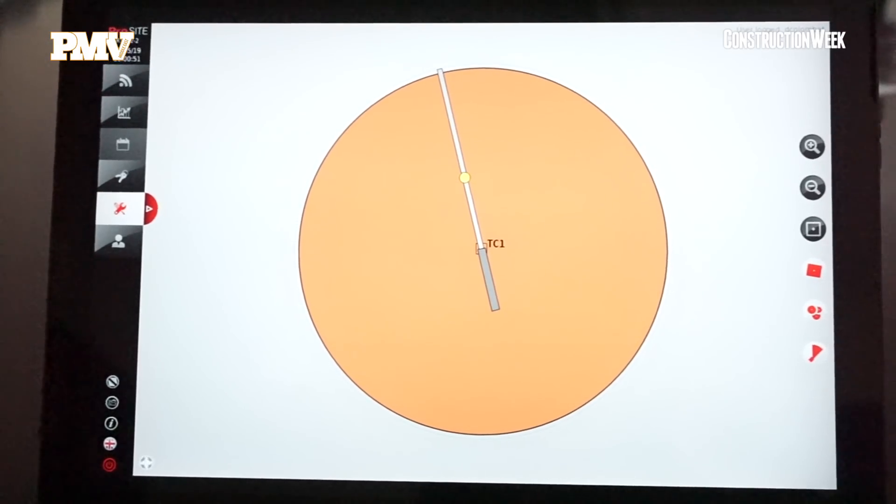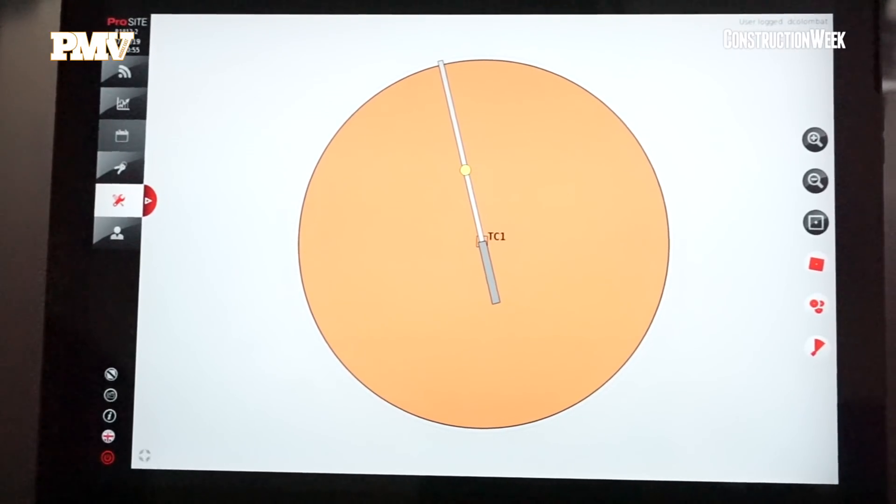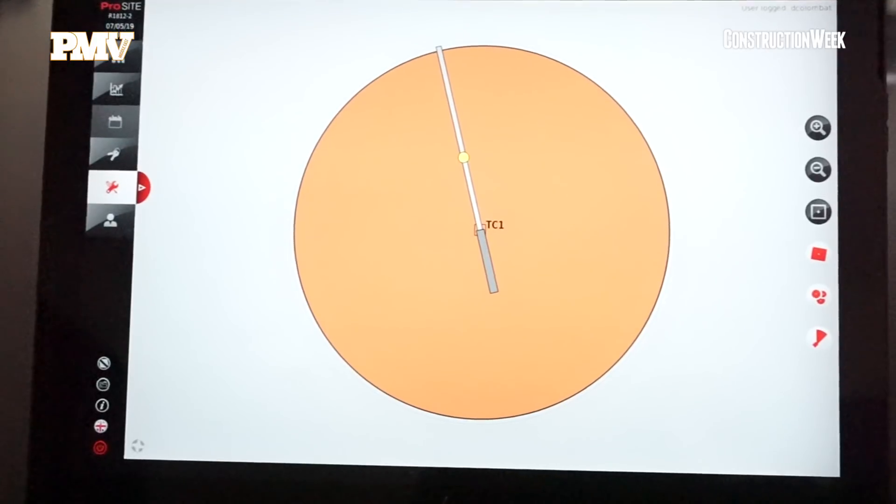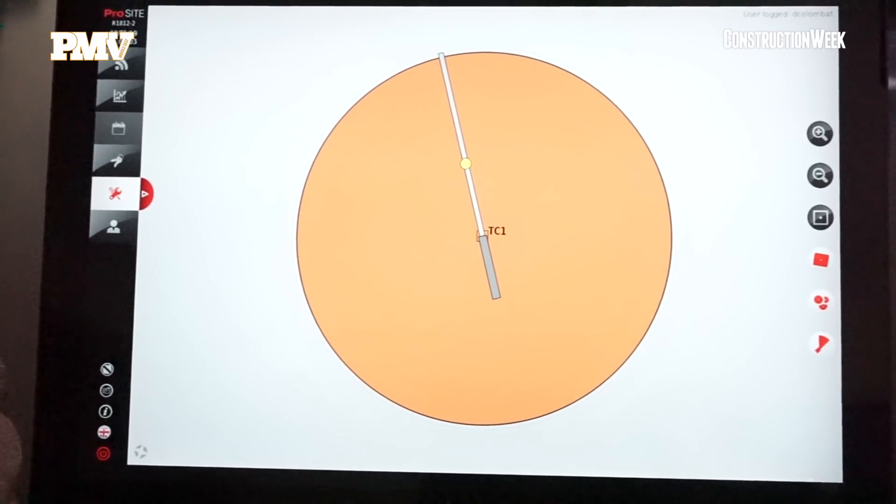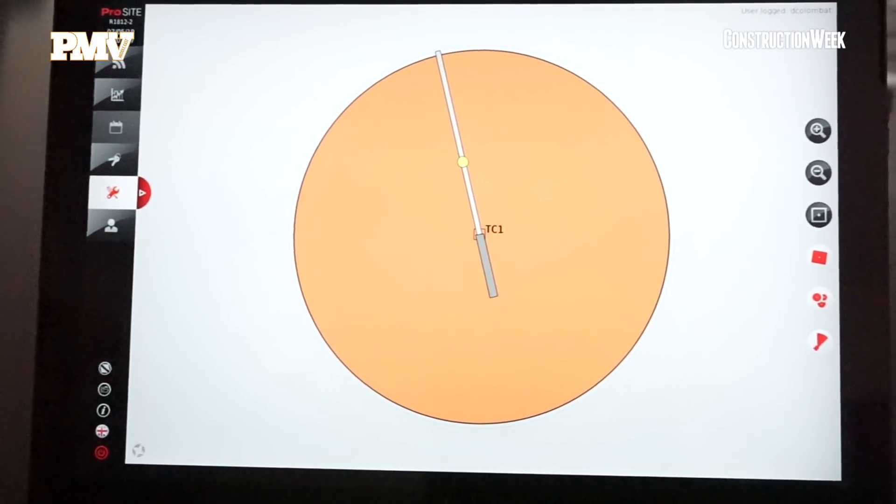Here is the ProSight user interface. There's one system installed on the first crane. On that job site there will be three cranes at the end. So basically there's one crane on which there's all the sensors installed.